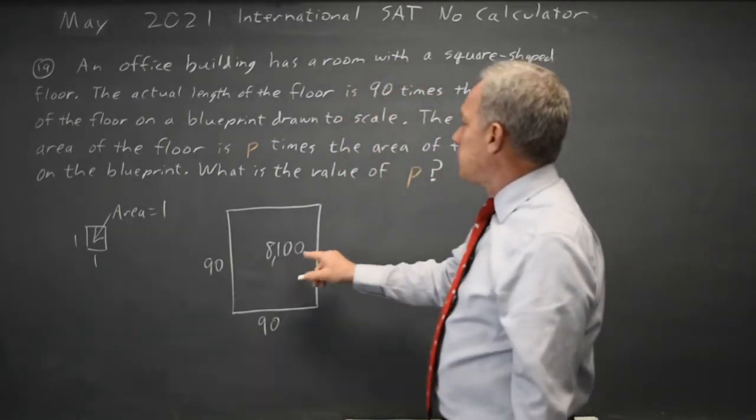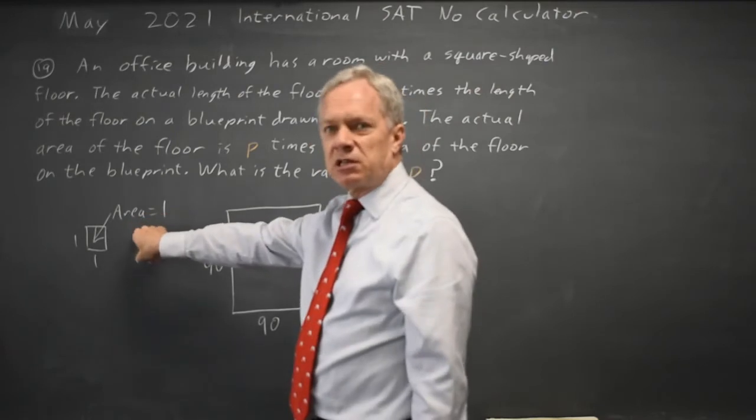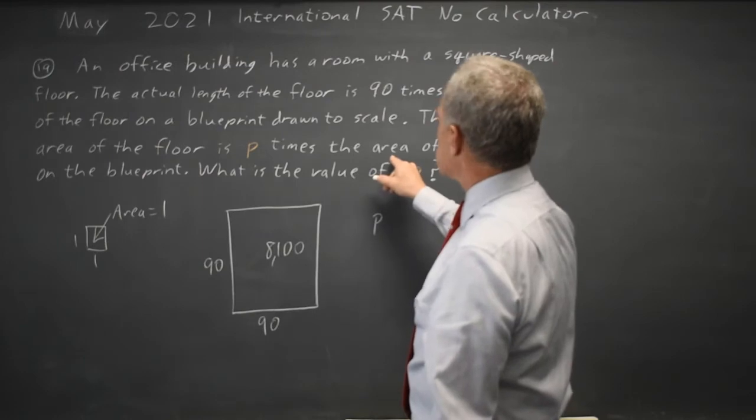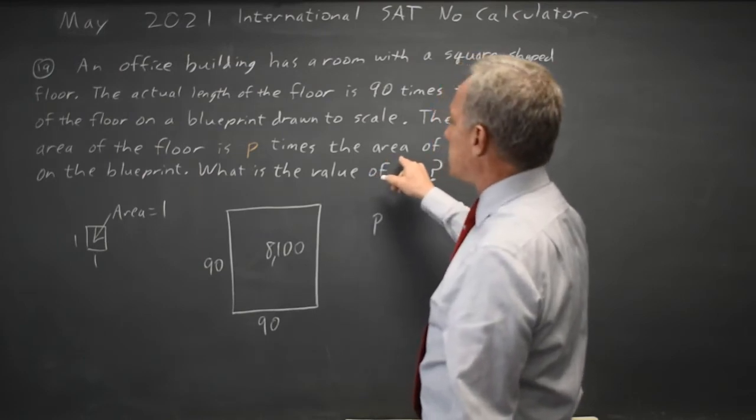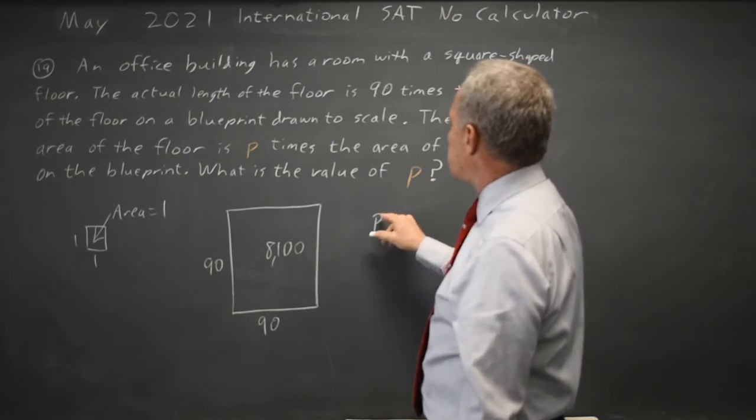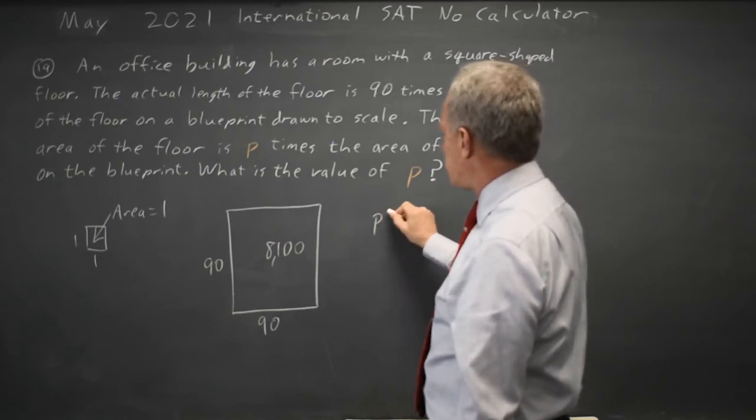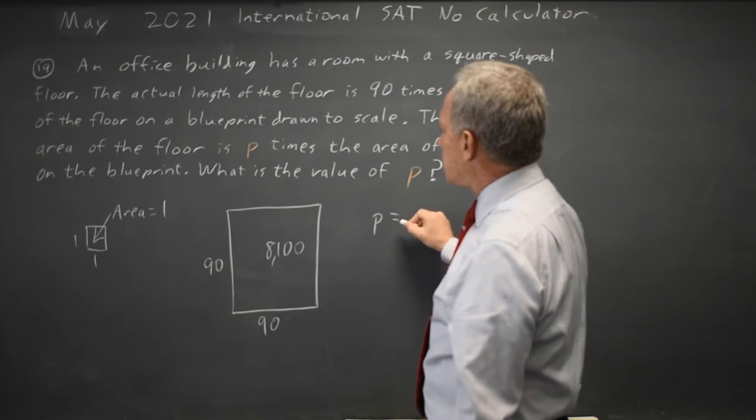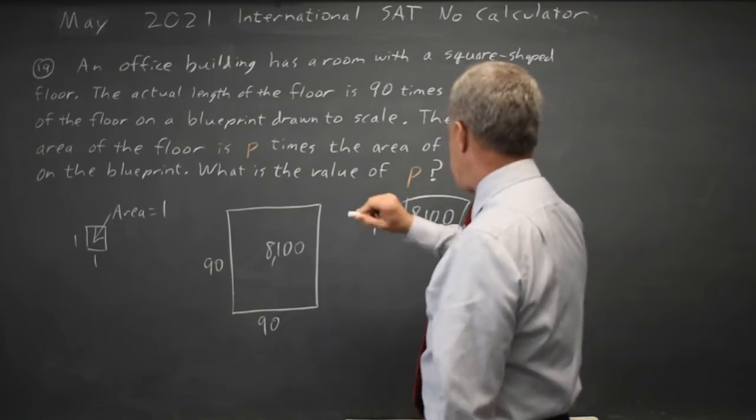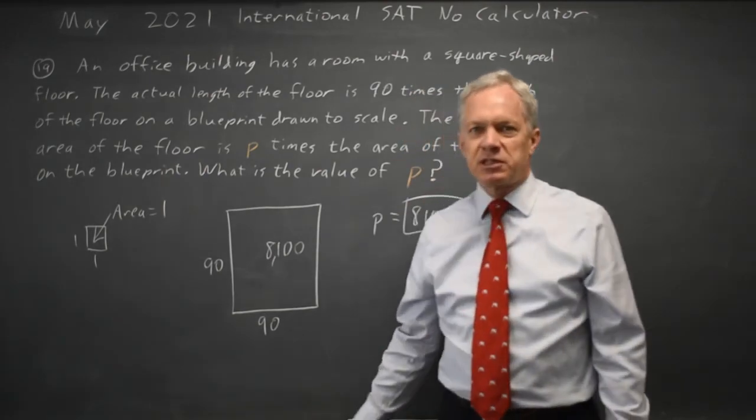And 8100 is 8100 times the area of the original. So P, which is how many times the actual is, how many times bigger the actual is than the area of the blueprint, the actual is 8100 times the area of the blueprint. So that would be our answer in this case.